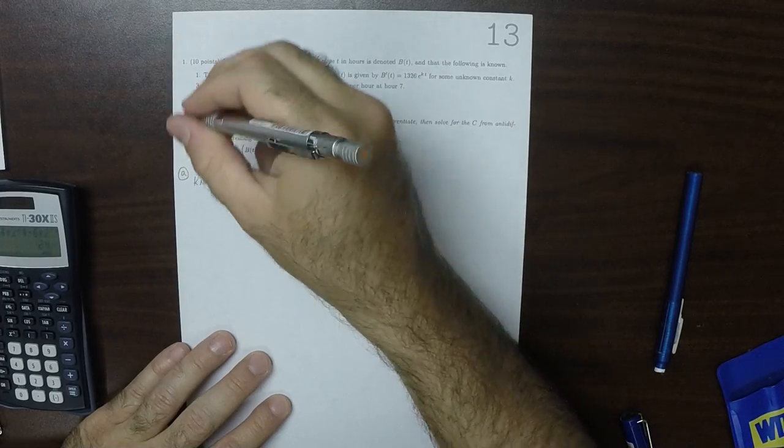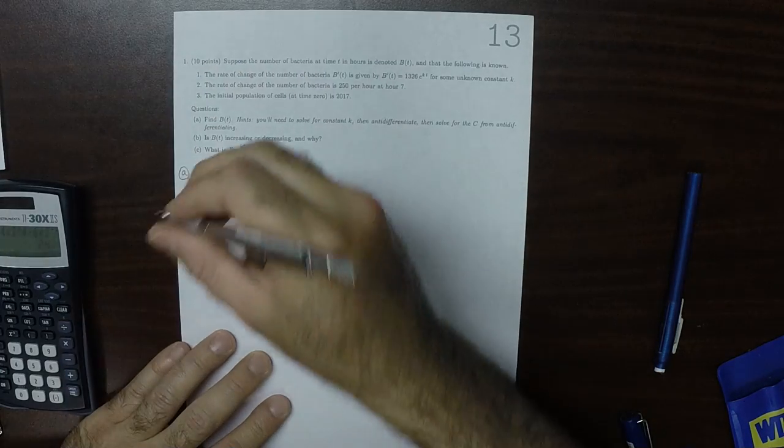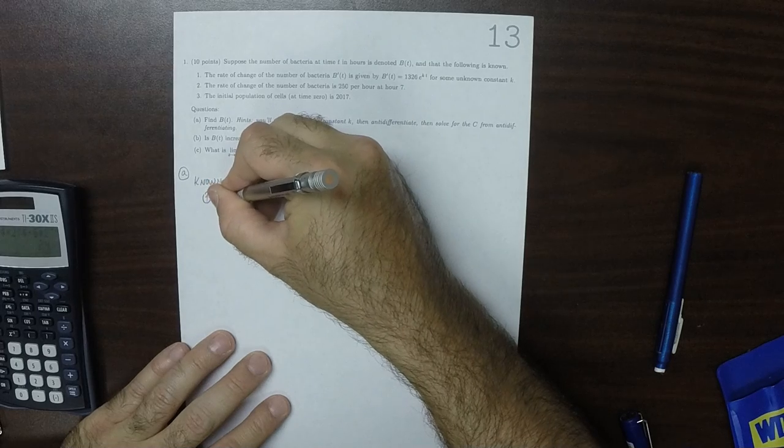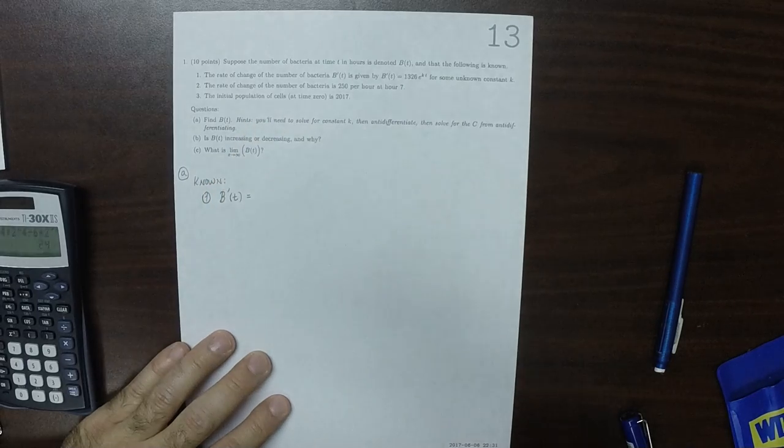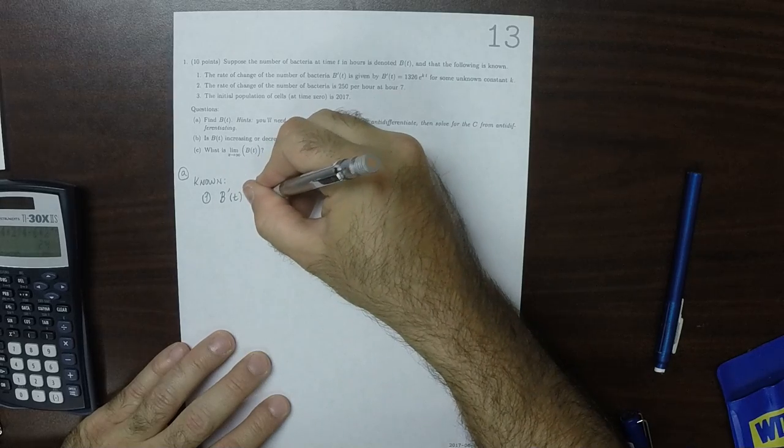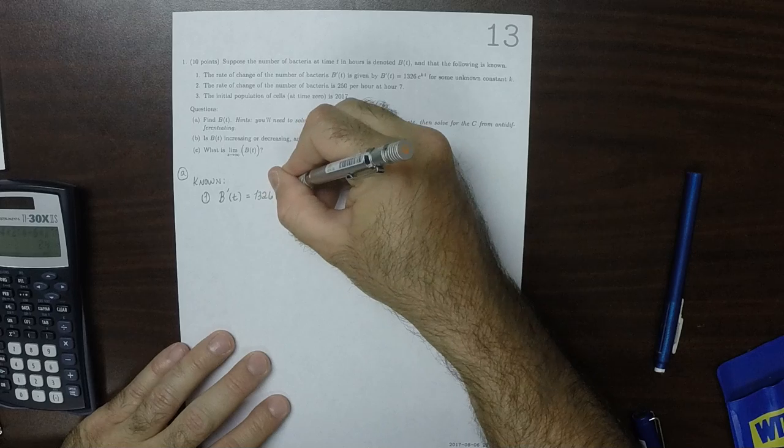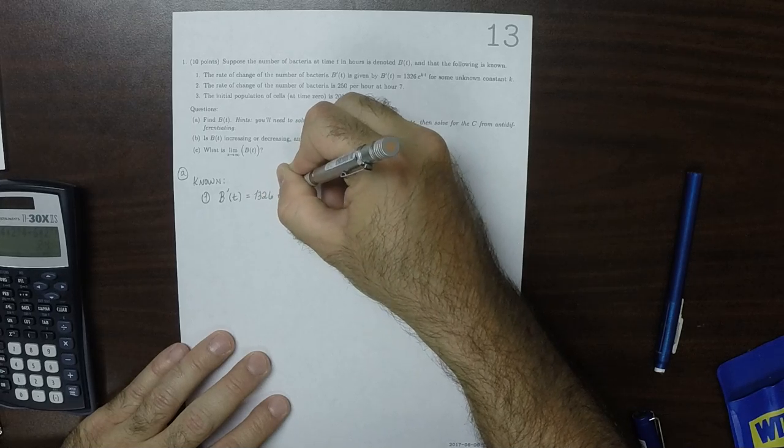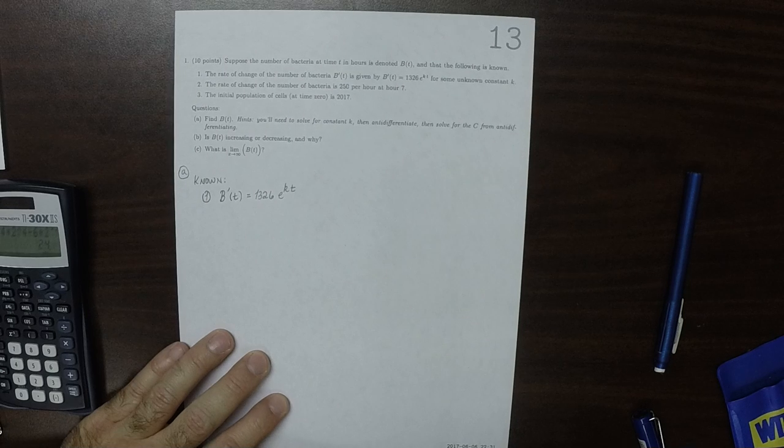From item 1, the math that we're given is that the derivative is 1,326 e to kt, where k is constant but unknown.